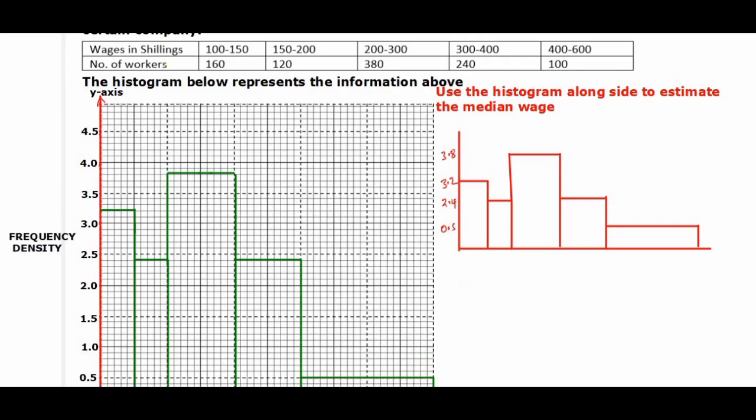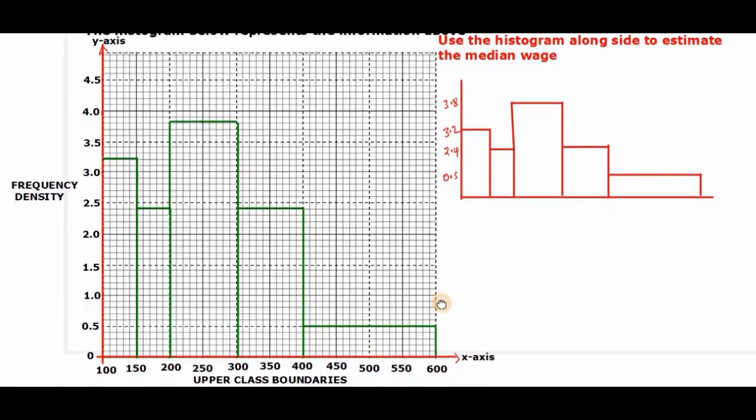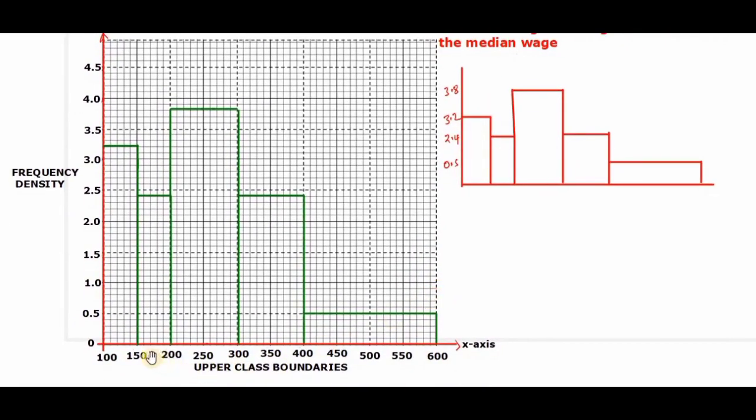So as we have it in the histogram here, from 100 to 150 for the first bar, we will simply have a width of 50. Then right here we have 50 again, that is from 150 to 200. Then the next one is 100.